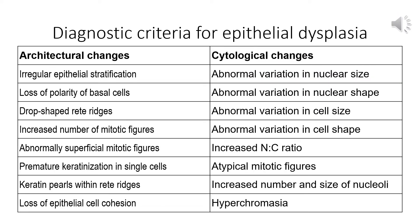The architectural changes that are diagnostic criteria for epithelial dysplasia include: irregular epithelial stratification, loss of polarity of maturation including loss of polarity of basal cells, drop-shaped rete ridges, increased number of mitotic figures, abnormally superficial mitotic figures extending above the basalis, premature keratinization in single cells, keratin pearls within the rete ridges, and loss of epithelial cell cohesion.